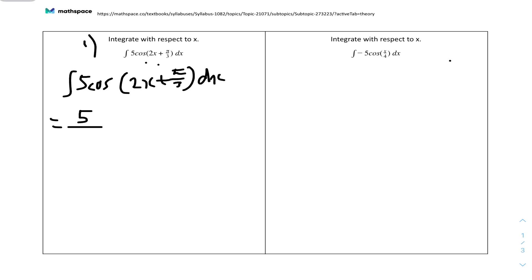It's over by the derivative of the bracket. The derivative of 2x plus pi over 3 is 2, because if you differentiate it you will get 2. So it will be 5 over 2.